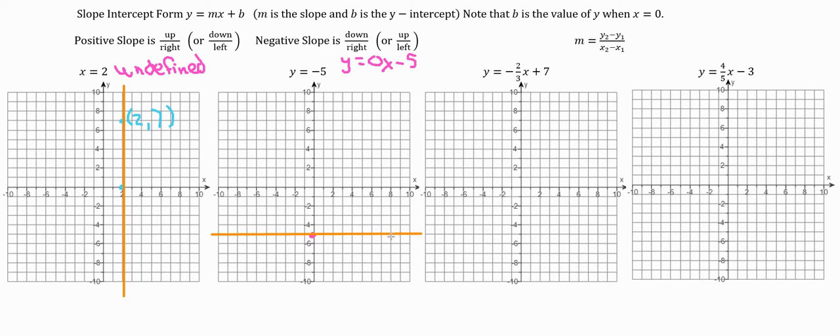Now, this time we've got some fractions for our slope. y equals negative 2 thirds x plus 7. Again, we're going to start at the y-intercept, which is a positive 7. So we're going to go up 7. We put a dot right there.